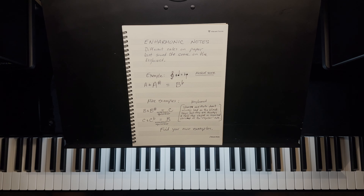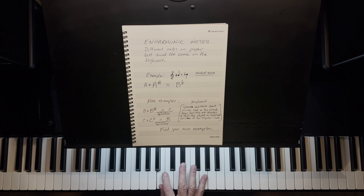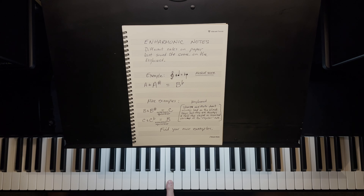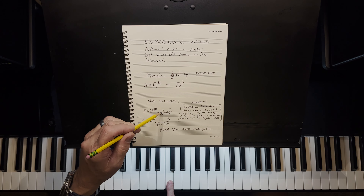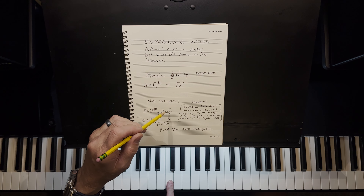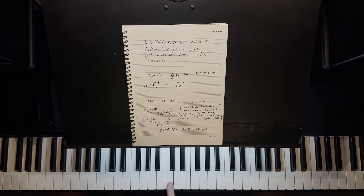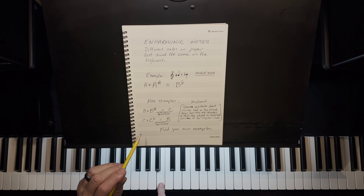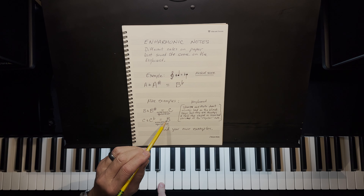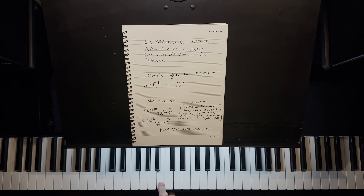B to B-sharp: if I take my B and raise it by a half-step — because that's how I get a sharp — I end up on C. So B-sharp's enharmonic equivalent is C. If I'm on C and go to C-flat, I go a half-step down and I'm on B — the enharmonic equivalent.